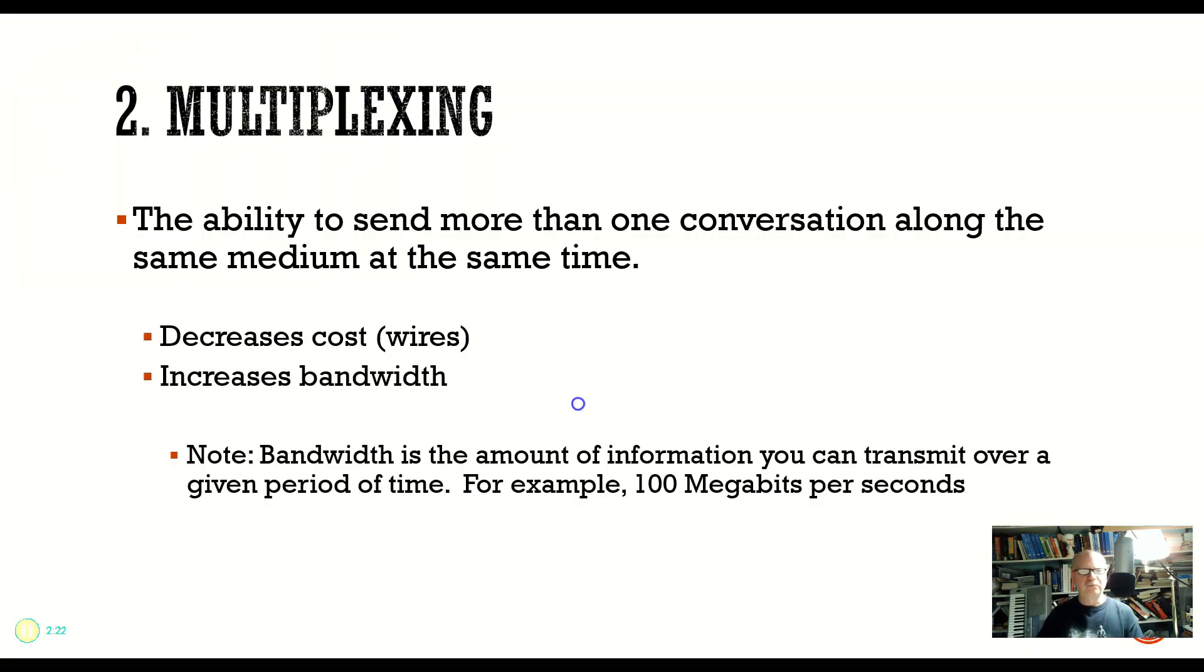The next one is multiplexing. Multiplexing is the ability to send more than one conversation along the same medium at the same time. You're probably familiar with this. For example, if you have cable TV at home, you're able to receive multiple channels, so multiple conversations all at the same time.